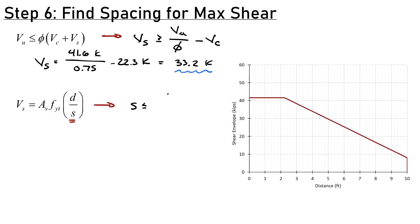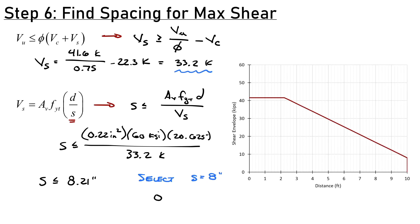Solving for S: S is less than or equal to AV times FYT times D divided by VS. Plugging in: 0.22 square inches times 60 KSI times 20.625 inches divided by 33.2 kips equals 8.21 inches. I'll select 8 inches because that's easier to lay out. Repeating the process, an 8-inch spacing gives a capacity of 42.3 kips, which satisfies us everywhere. That puts us right up here at 8 inches, which works everywhere, but I can get away with 10 inches in most of my beam.